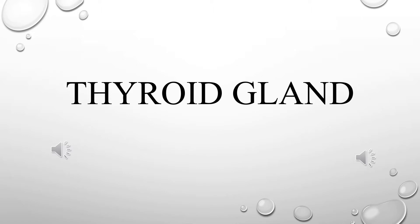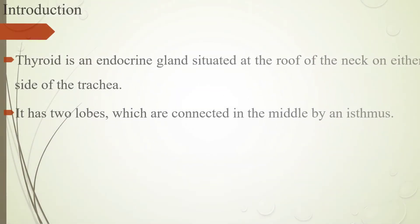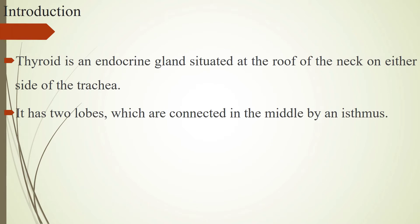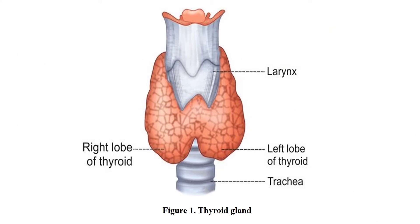So what is the thyroid gland? Thyroid is an endocrine gland situated at the root of the neck on either side of the trachea. It has two lobes which are connected in the middle by an isthmus. In this figure you can see the thyroid gland lobes and how it is situated on either side of the trachea. Normally the weight of thyroid is about 20-40 grams in adults, but it is subjected to variations even under physiological conditions.